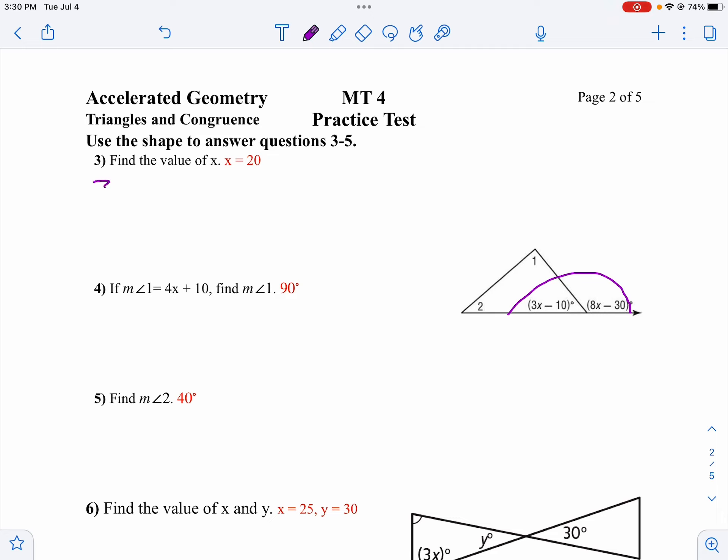I'm going to say 3x minus 10 plus 8x minus 30 equals 180, because that's what makes it a straight angle.